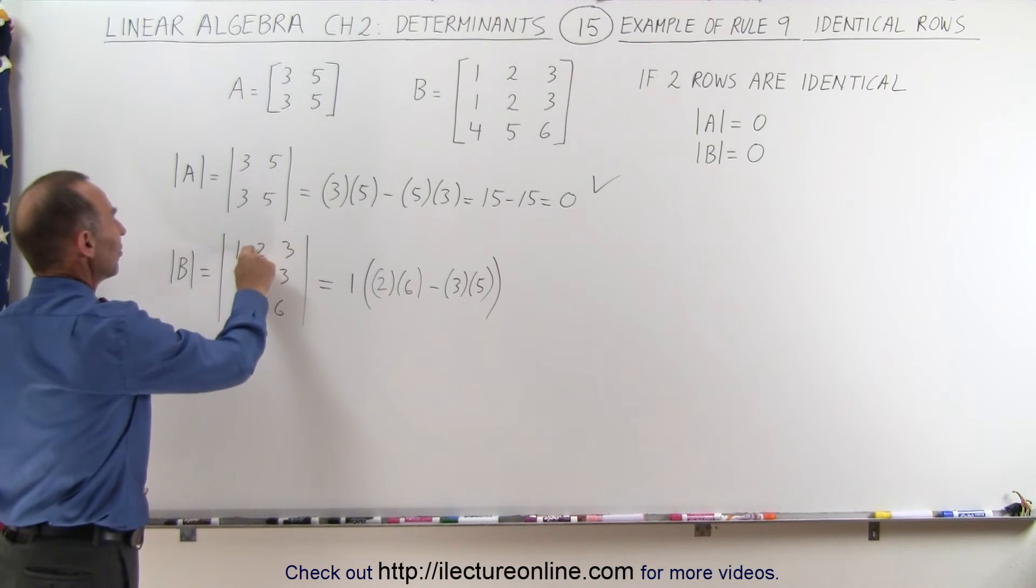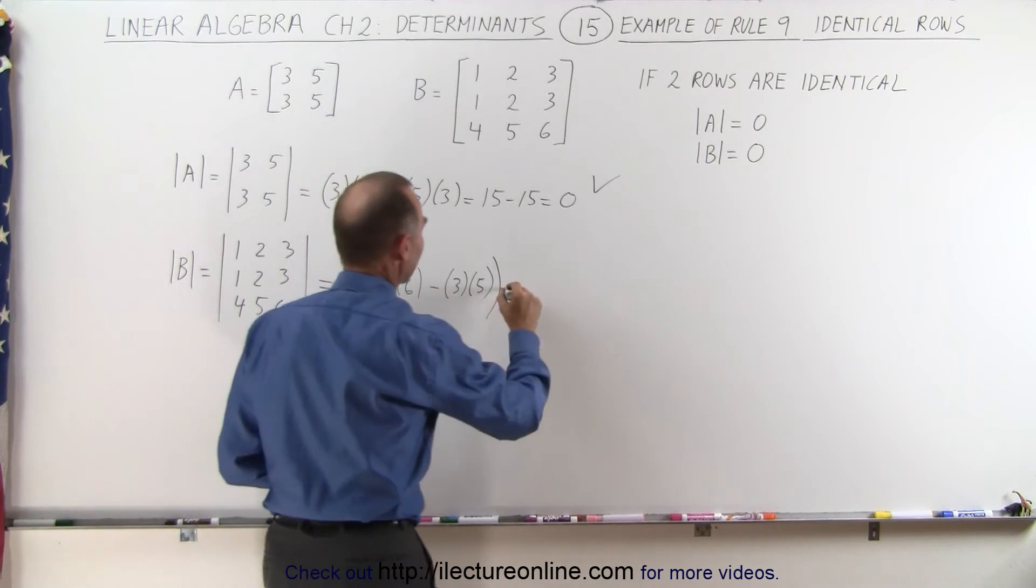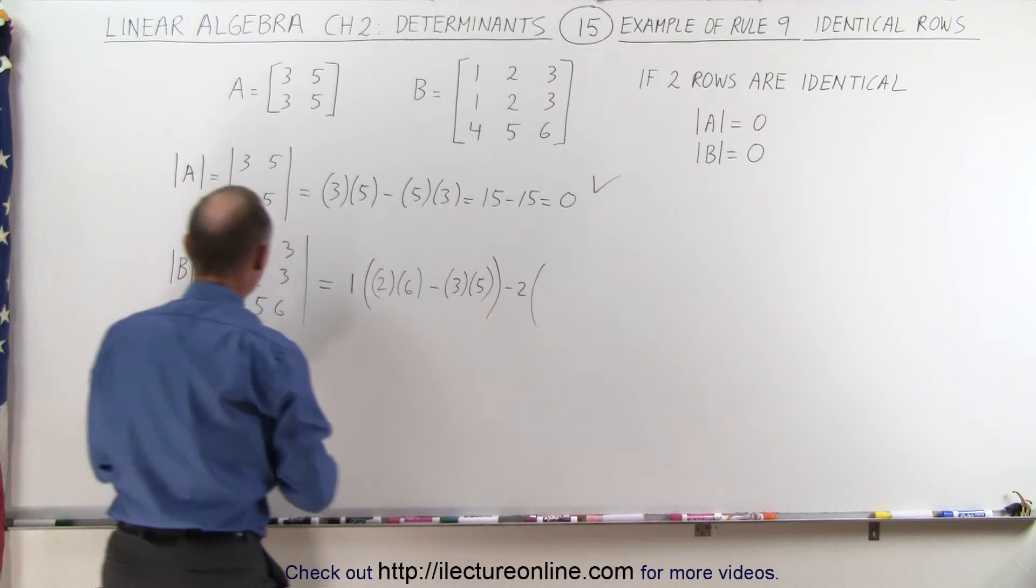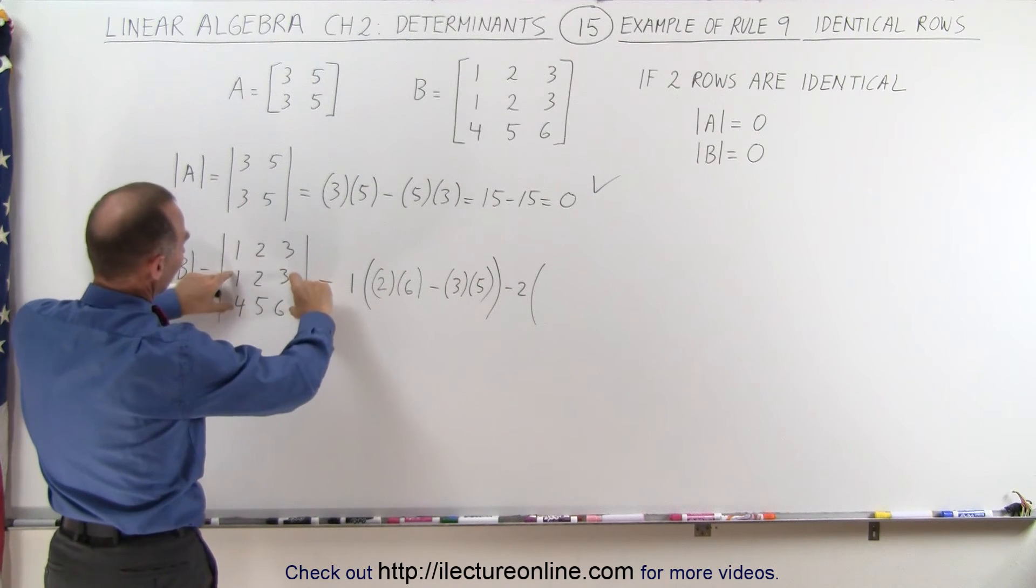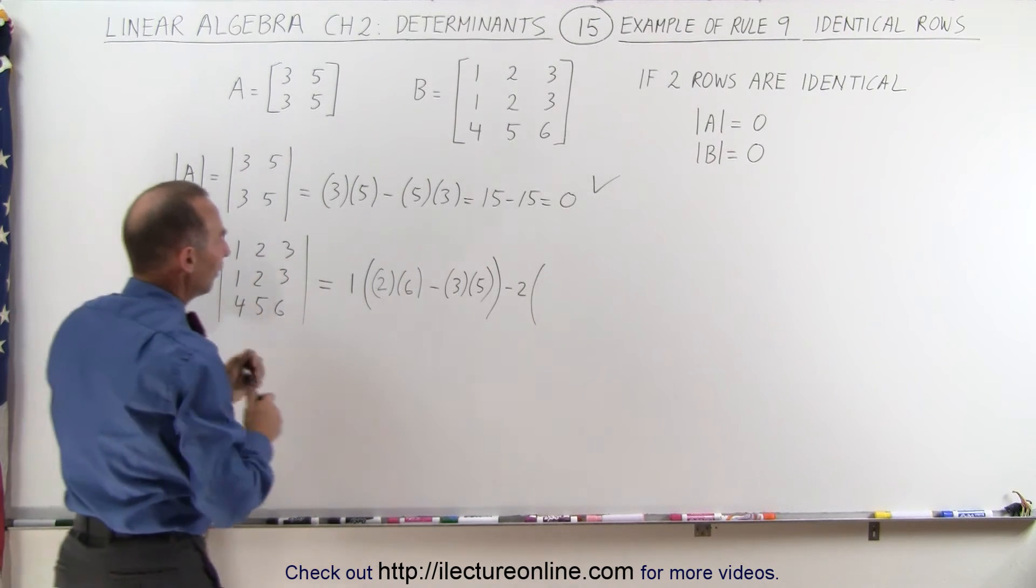Now we take the second element, but this is now going to be negative. Negative 2 times - if you get rid of the middle column in the top row like this you have these four elements left - so it's 1 times 6 minus 3 times 4.